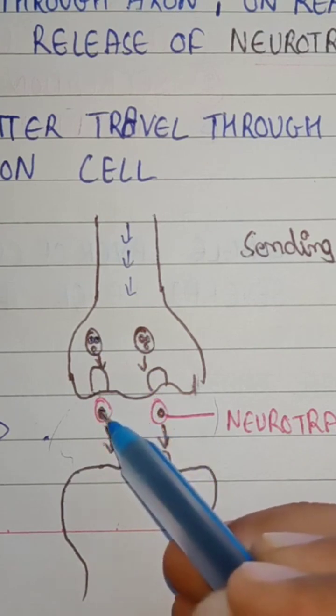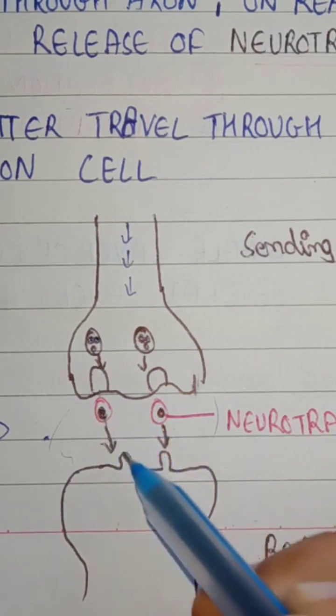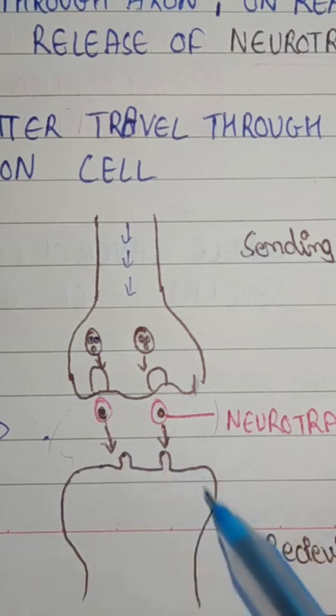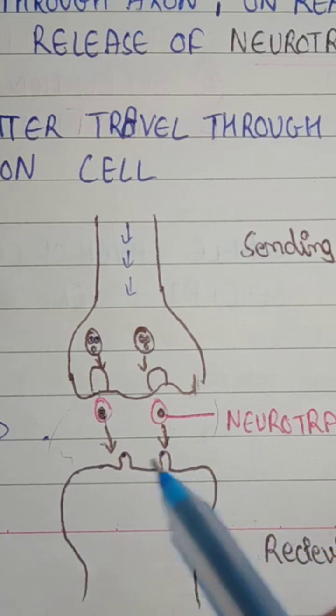By traveling through the synapse, they reach the receptor of the other receiving cell or neuron. This is how neurotransmitters help in cell signaling.